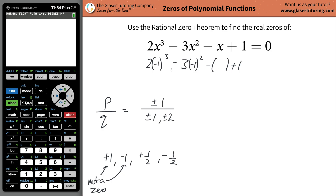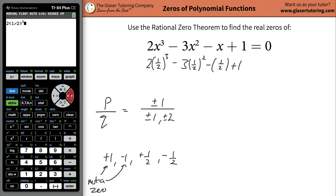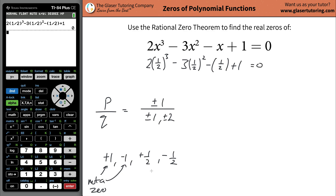Everybody makes mistakes — you've got to try to catch them, and it depends on what you do about it. So plug in the positive one half everywhere. Use the calculator to make your life a little easier. Take one half in parentheses and then cube it, then minus three times one half squared, then minus one half, then plus one. Oh, that worked out to be zero! So positive one half is a zero. X equals positive one half.